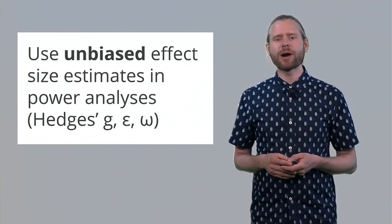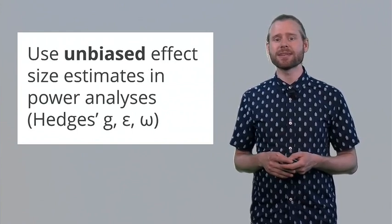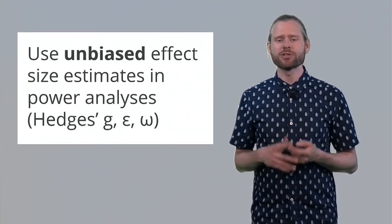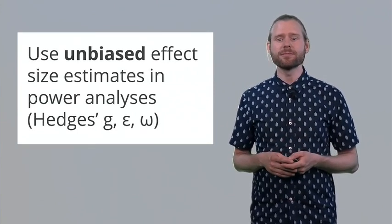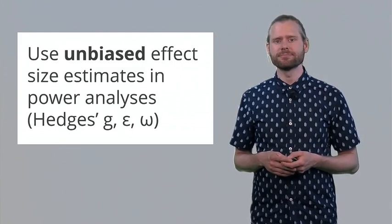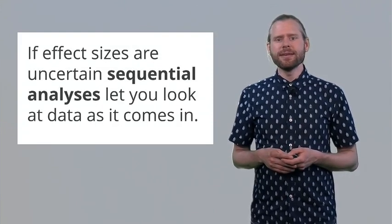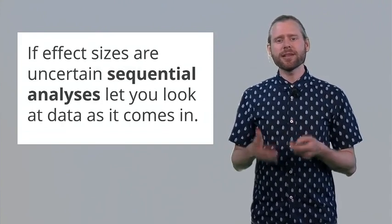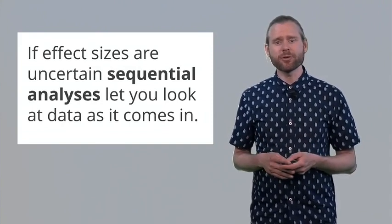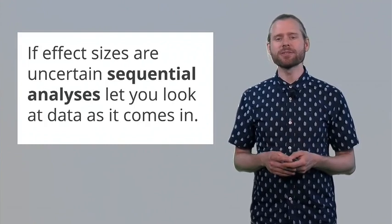If you perform a power analysis, always use unbiased effect size estimates in the power analysis, so Hedges' g, epsilon or omega. If effect sizes are uncertain, there is not a lot to go on in the published literature, or there is nothing comparable in the published literature, then sequential analysis are one way to let you look at the data as it comes in, while controlling your type 1 error rates.